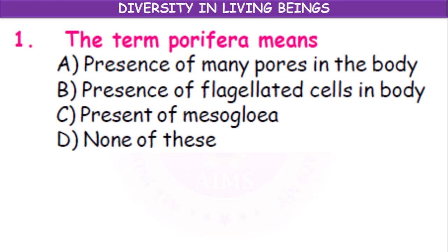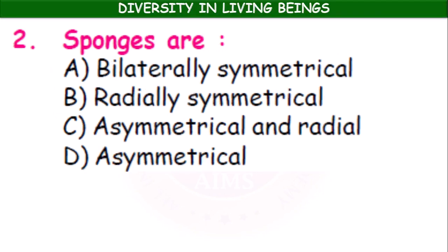The term 'porifera' means: the presence of many pores in the body; the presence of flagellated cells; the presence of mesoglea; or none of these. The correct answer is the presence of many pores in the body. Sponges are asymmetrical — not bilaterally or radially symmetrical.